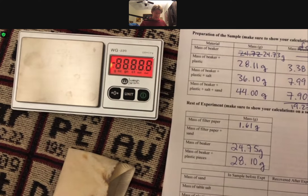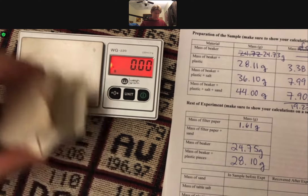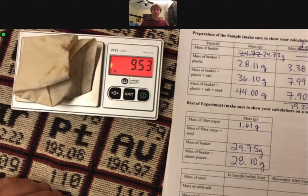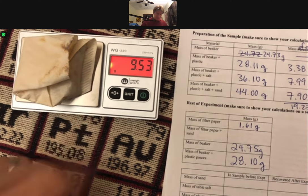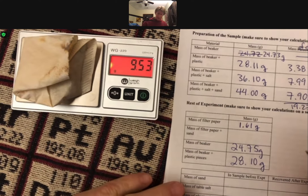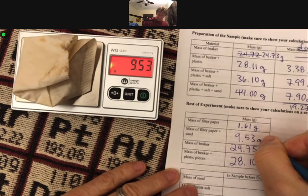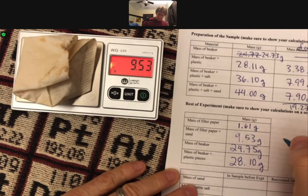I'll first get my scale up and going. Got the dot, that means it's all ready to go. Put my filter paper with my sand on there. My dot left. And I get 9.53 grams. Yes, we'll take that.